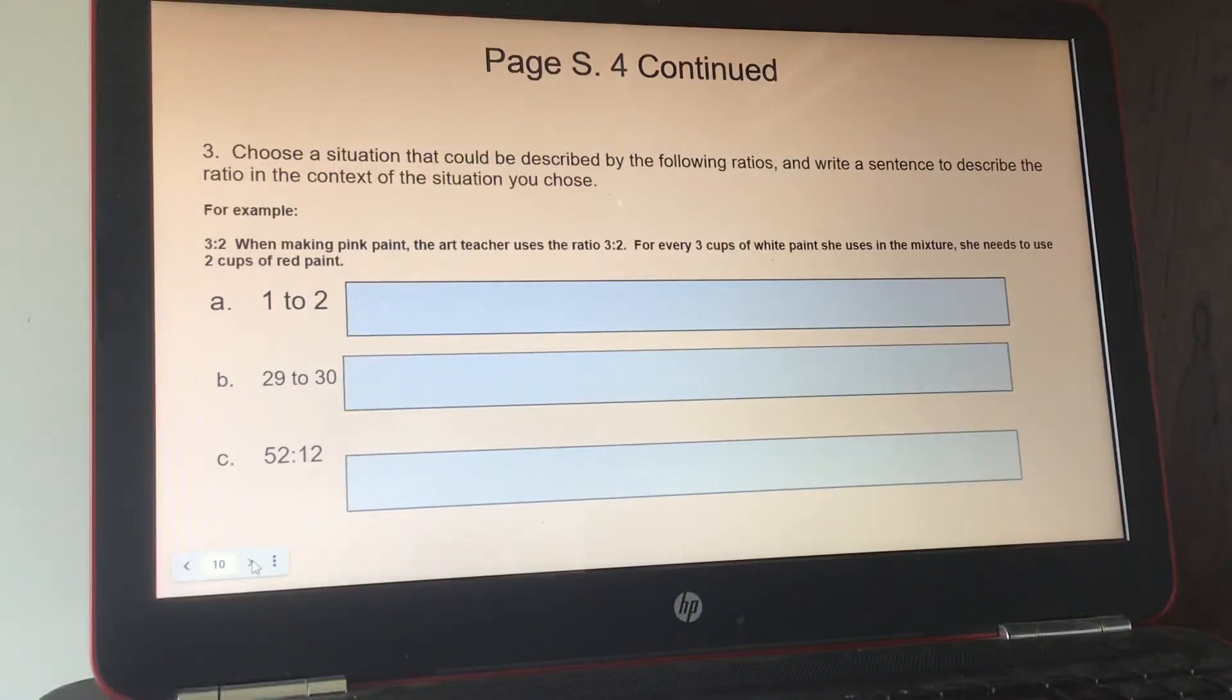And then C, choose a situation that could be described by the following ratios and write a sentence to describe the ratio in the context of the situation you choose. So they gave you an example. They said three to two. When making pink paint, the art teacher uses the ratio three to two. For every three cups of white paint she uses in the mixture, she needs to use two cups of red paint. So you make up A, B, and C.